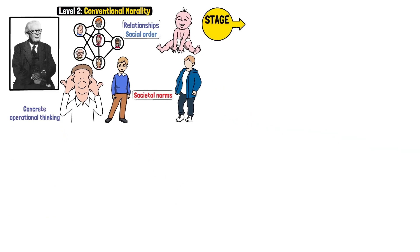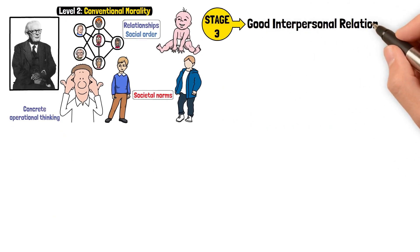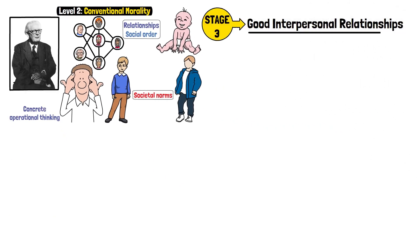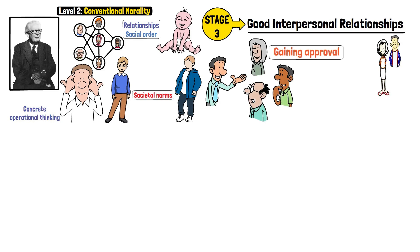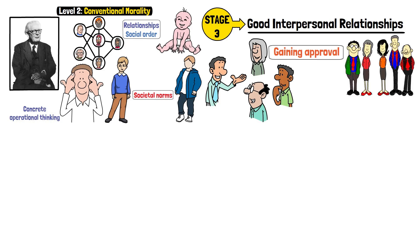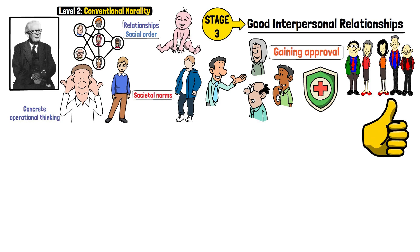Stage 3 – Good Interpersonal Relationships. Morality is about pleasing others and gaining approval. Individuals act in ways that conform to the expectations of those they care about. The focus is on being a good person according to social standards.